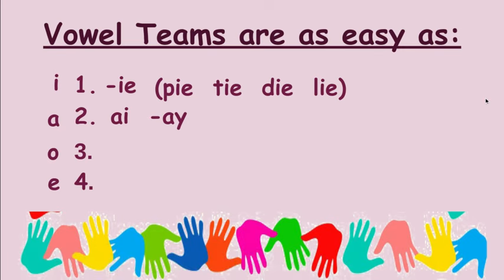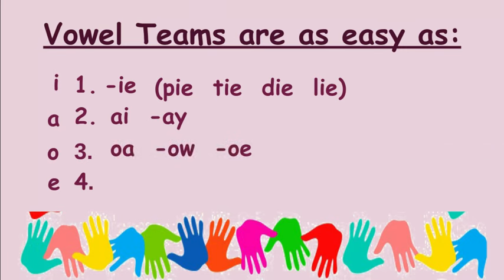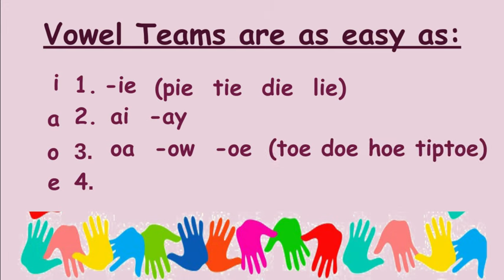I need to think about the position of where I'm hearing the sound when deciding which vowel team to use in a vowel team word. O has three teams: OA, dash OW, and dash OE. Luckily my decision making is made easy because OE is only used in toe, doe, hoe, and tiptoe to represent that long O sound.